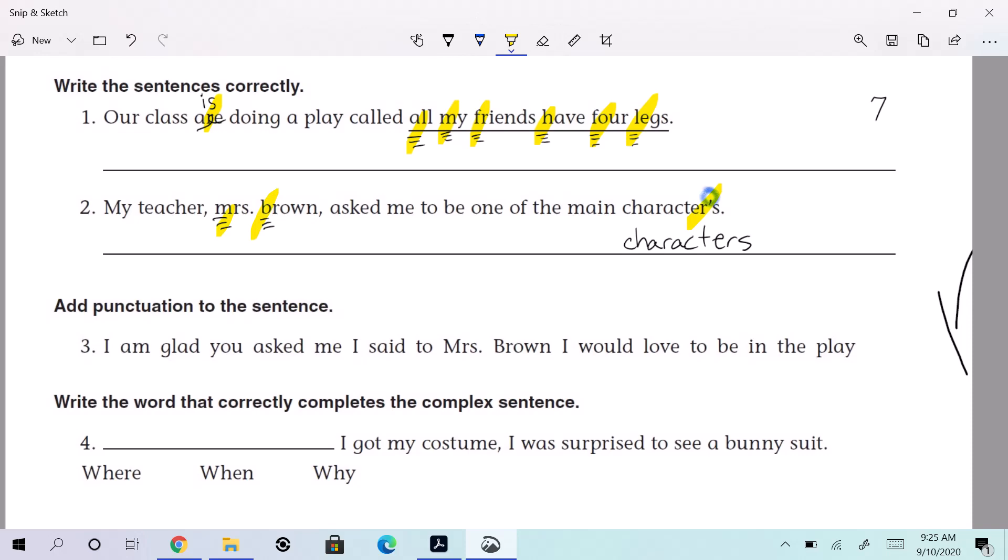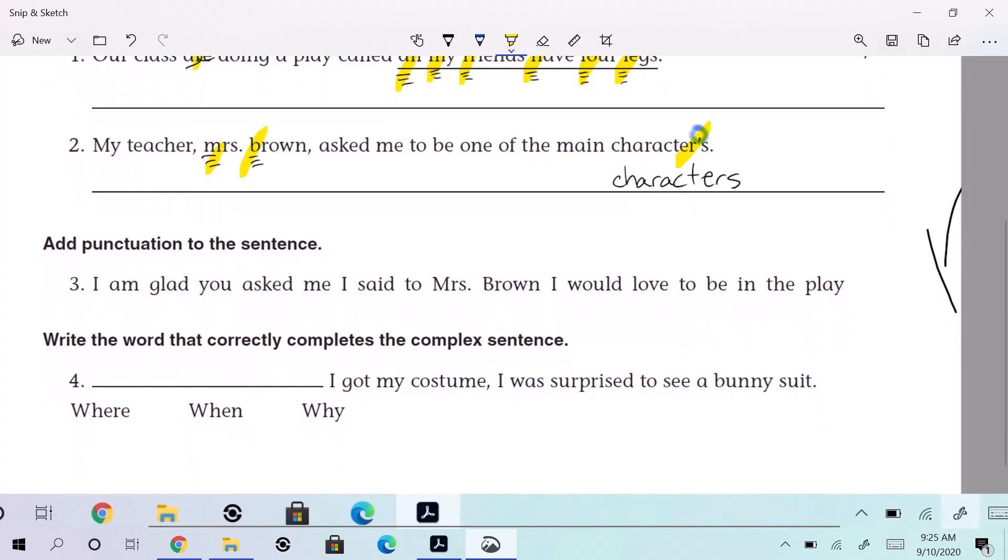Elizabeth. For the next one, it says, add punctuation to the sentence. It says, I am glad you asked me, I said to Mrs. Brown. I would love to be in the play. Oh my goodness. There's all kinds of mistakes here. All right. We have a tagline in here, don't we? We have a speaking part and a tagline.